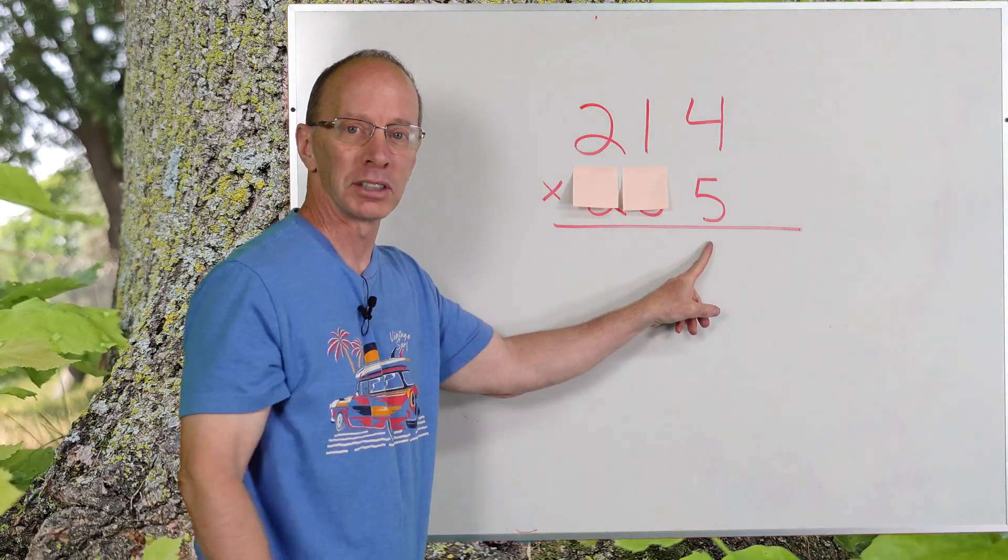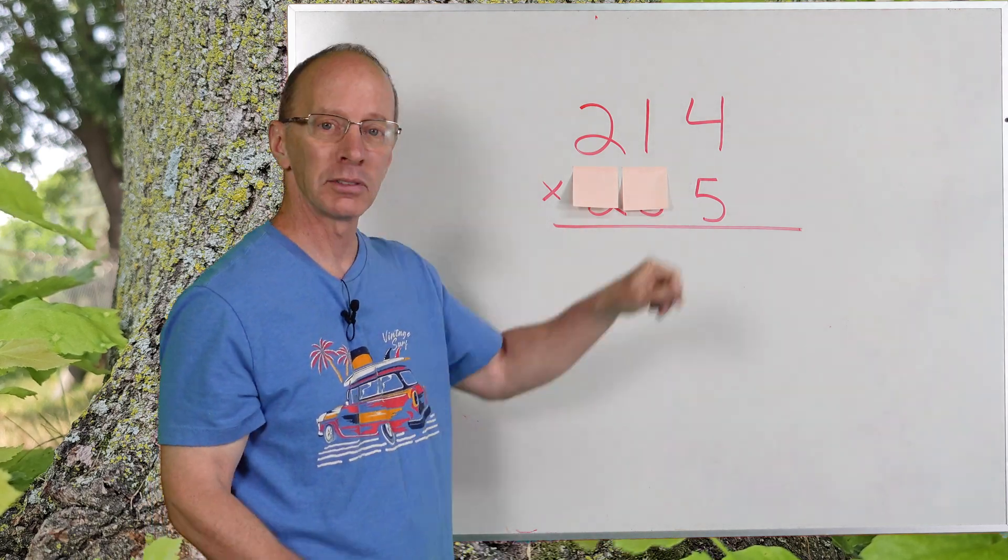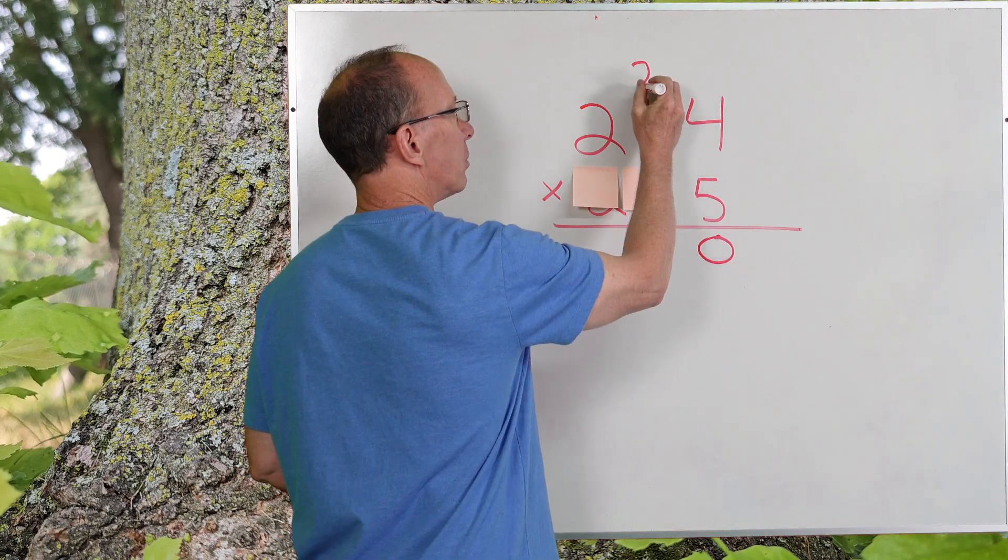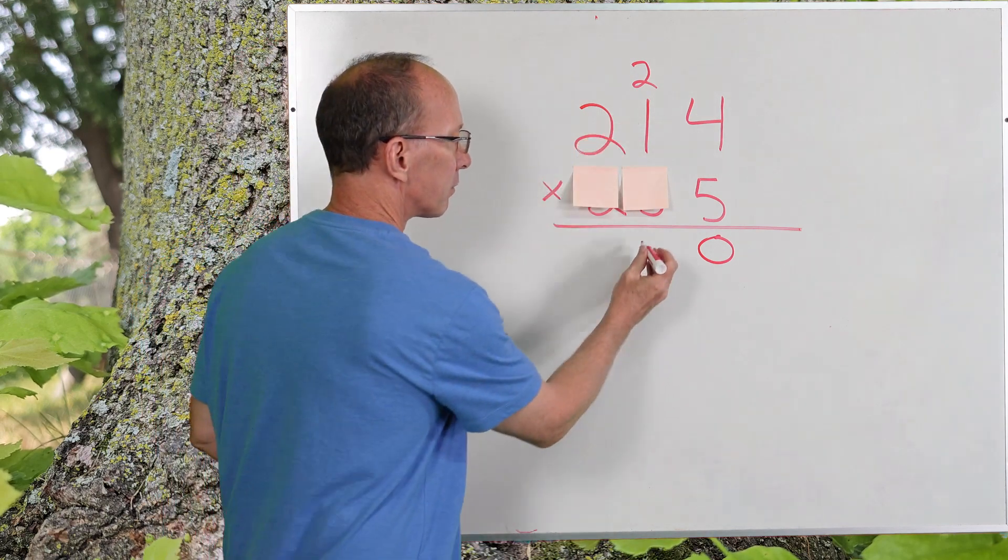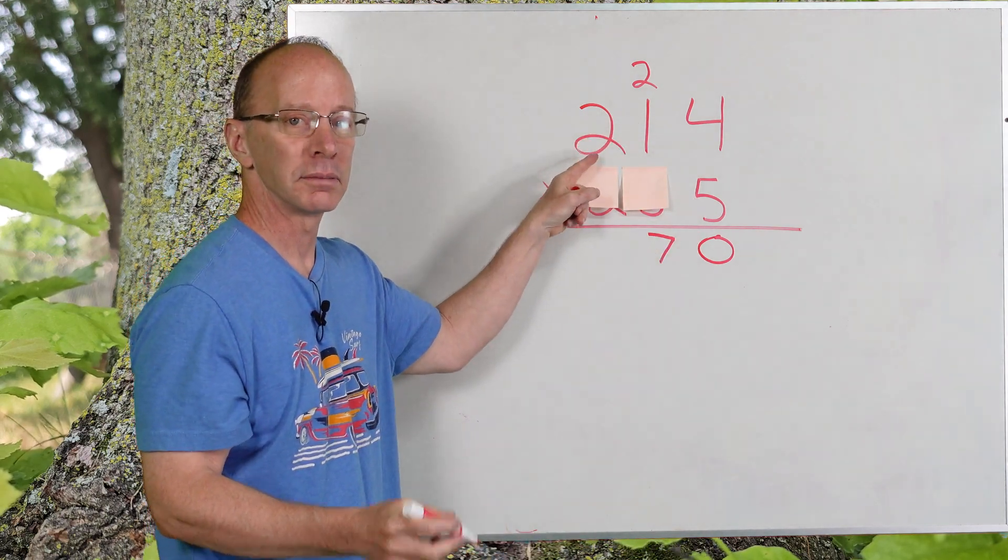Since I'm starting with five, I'm going to start to write my answer right below the five. So, five times four is 20. Put the two up here. Five times one is five plus the two, five, six, seven. And now I take five times two is 10.